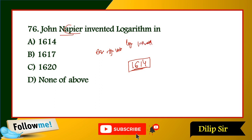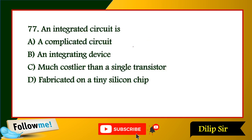Next question: what is an integrated circuit? An IC is a complete, complex circuit integrating many devices, much smaller and cheaper than individual transistors, fabricated on a tiny silicon chip.